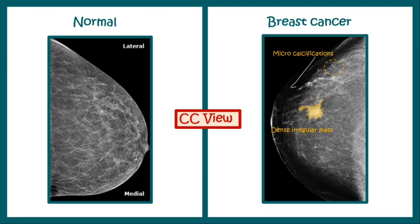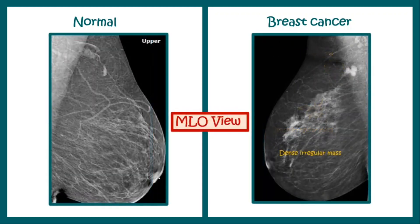If we take an MLO view, on the left hand side we have the normal MLO view, but on the right hand side, in addition to the dense irregular mass, we can see that along the pectoralis muscles there are certain masses. These masses represent the axillary lymph nodes. Involvement of axillary lymph nodes in breast cancer can help in the staging and grading of the cancer. It is therefore very important to look for axillary lymph nodes, and visualization of the pectoralis muscle helps us find them in a mammography.